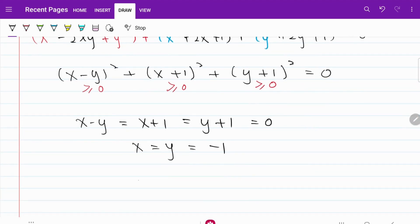So if you're looking for the product of xy, then that's equal to negative 1 multiplied by negative 1, which is equal to 1.